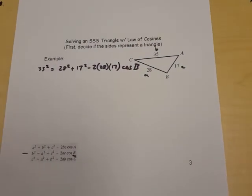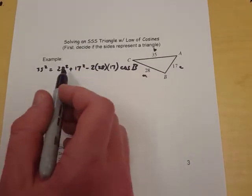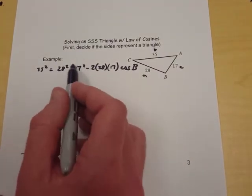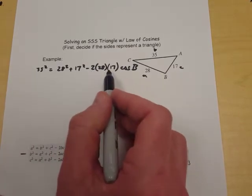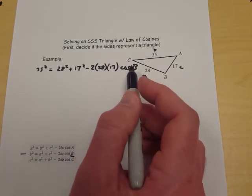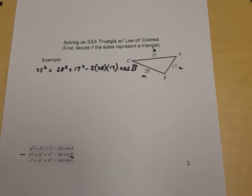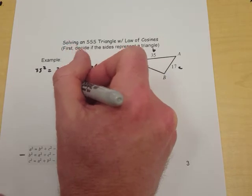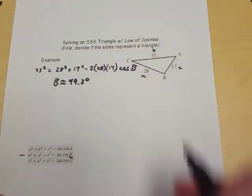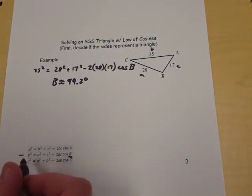And like on the last example, you've got to be careful about order of operations. So you'd want to subtract these things over to that side first, then divide by this number, and then do the inverse cosine for that B. B is going to end up being approximately 99.2 degrees.